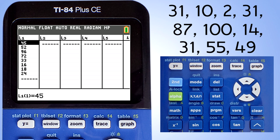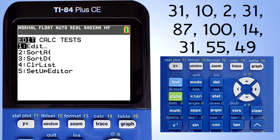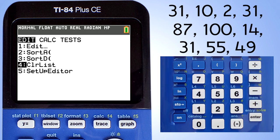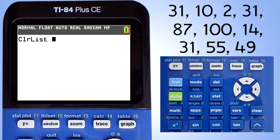This window pops up. We have some numbers in a list from a previous problem. The numbers are in the L1 list. I will show you how to delete a list. We will delete the numbers in the L1 list. Press the stat button again. This window pops up. Go down to number 4, clear list. Press the enter button or the 4 key.